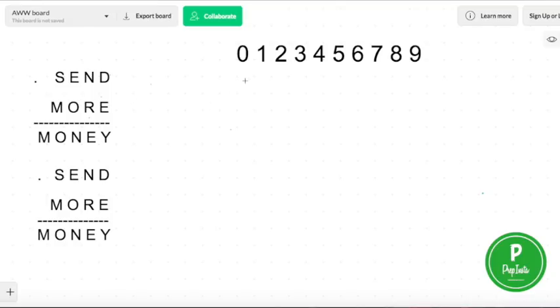What I'll suggest you do whenever you start with a cryptarithmetic problem is write all the possible numbers from 0 to 9 that can be taken up by all these alphabets, so that whenever you find a value, let's say S is 4, you can strike up the value 4 and know what existing values are available for the other alphabets.